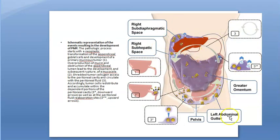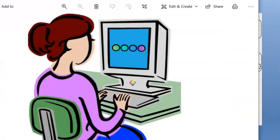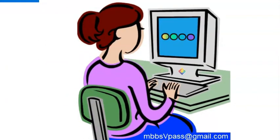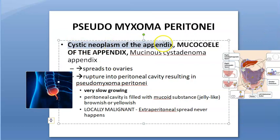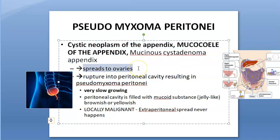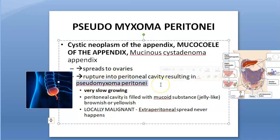They accumulate everywhere. That is pseudomyxoma peritonei — mucinous cells from the appendix depositing everywhere in the peritoneum. Whenever there is a cystic neoplasm of the appendix, or a mucocele of the appendix, or a mucinous cyst adenoma of the appendix — all essentially the same — it ruptures and deposits these mucus-secreting cells in the peritoneum, resulting in pseudomyxoma peritonei.